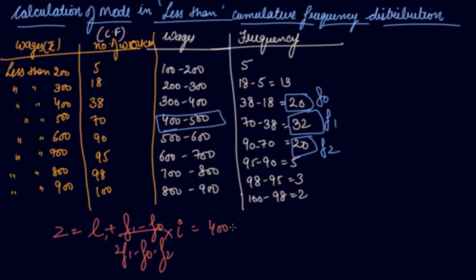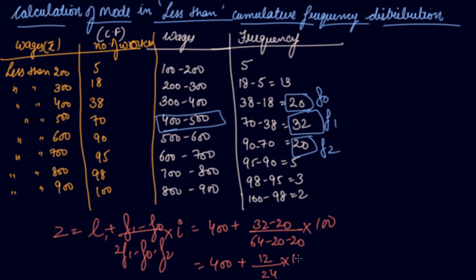L1 is 400, F1 is 32, minus 20, then 2 into 32 is 64, minus 20, minus 20, into 100. The distance between the classes is 100. Times 12 divided by 64 minus 40 is 24, and 200. So we get an answer of 450. Your mode value is 450 in this case.